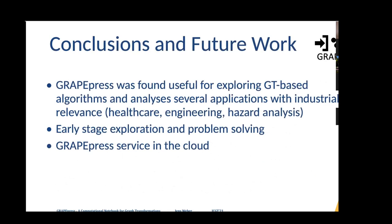In summary: GrapePress has been used in several industrial applications, and at least one company uses it for industrial applications particularly in safety and hazard analysis of systems. It is viewed as a tool useful for early-stage exploration and problem solving. GrapePress worksheets are completely valid Clojure programs, so they can be imported into production software. Future work includes offering a GrapePress service in the cloud so that without even a Vagrant virtual machine, you can just go to a GrapePress URL, fire up a browser, and experiment.